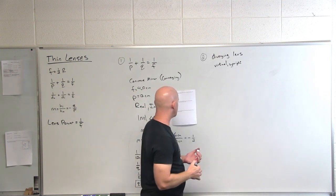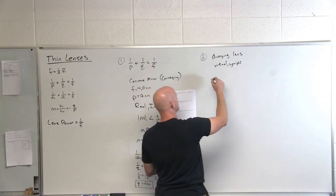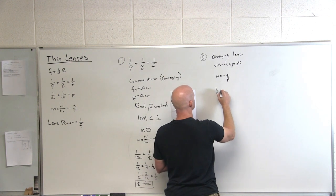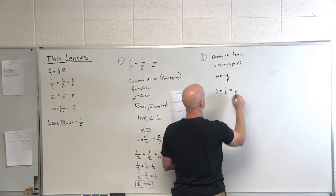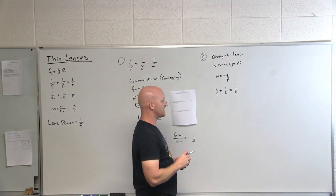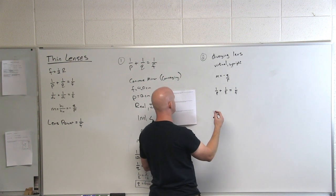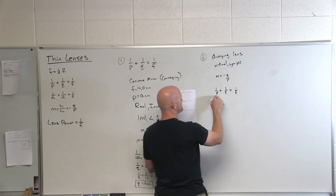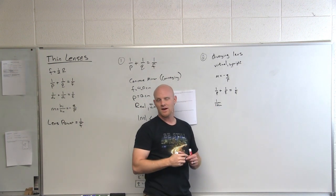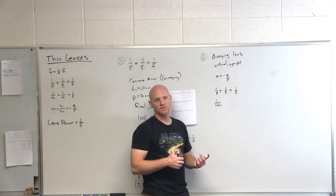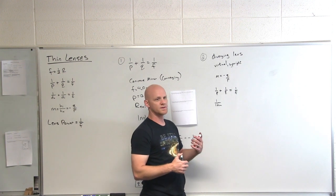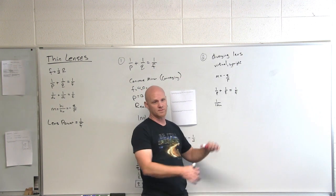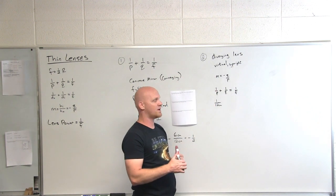We already know it's going to be virtual and upright, but we want to know the magnification of the image. Magnification is negative Q over P. We'll use the thin mirror and lens equation to figure out Q, then plug it into the magnification formula. The object is placed 12 centimeters away. Note: your object distance is always going to be a positive number in this section, unless you're dealing with systems of mirrors or lenses where a virtual image becomes the next object.